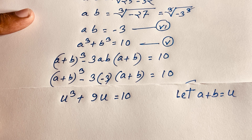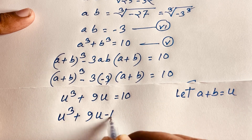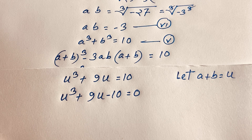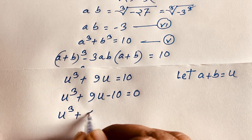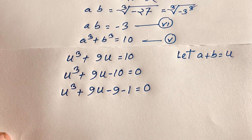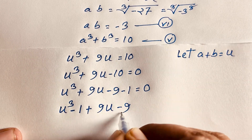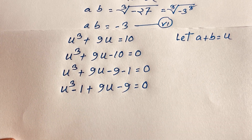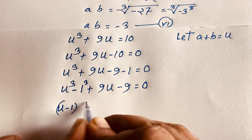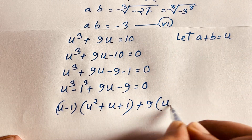Now we solve for u in this cubic equation. Moving 10 to the left: u³ plus 9u minus 10 equals 0. I rewrite this as u³ minus 1 plus 9u minus 9 equals 0, since negative 9 minus 1 equals negative 10. So I have (u³ minus 1) plus 9(u minus 1) equals 0.